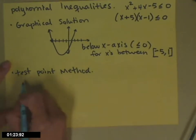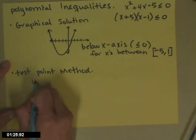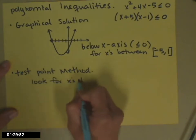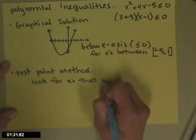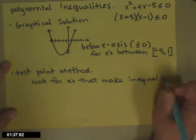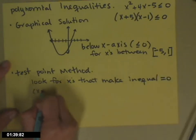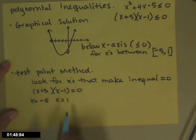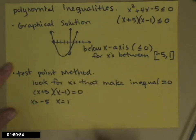The test point method, the way we do this is we look for the x values that make the inequality equal zero, which is the same thing we did above to find those x-intercepts. So if you have x plus five times x minus one equals zero, the x values that make that true are negative five and one, the x-intercepts you had up there.